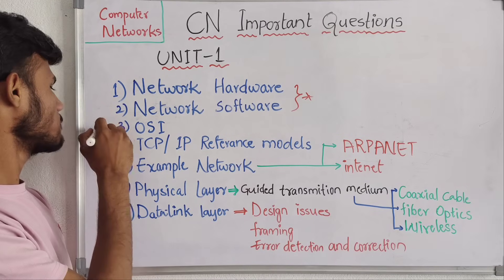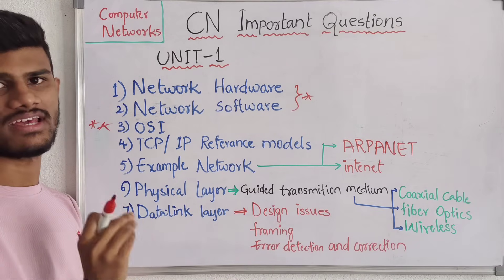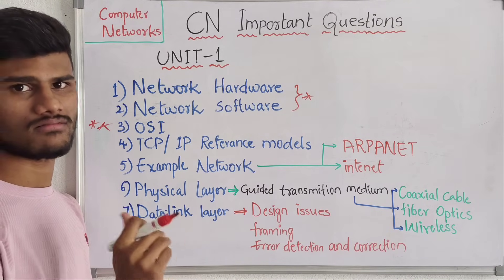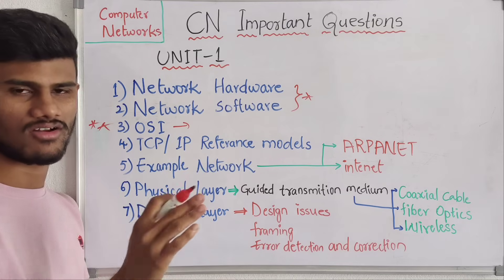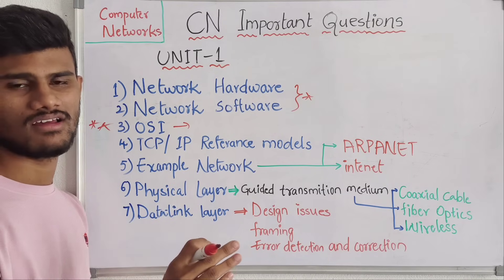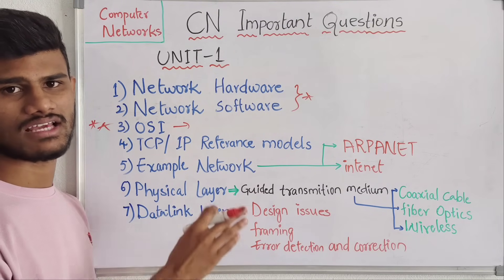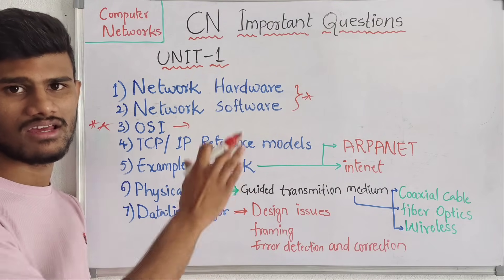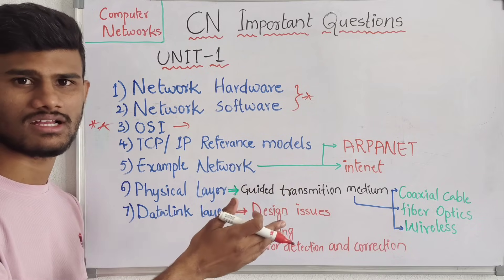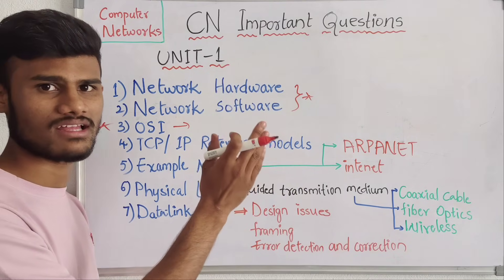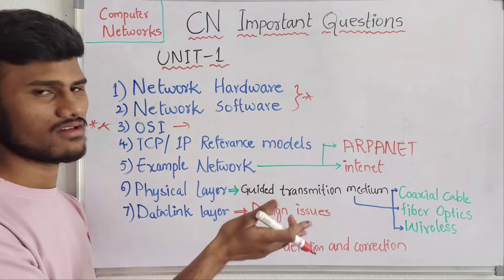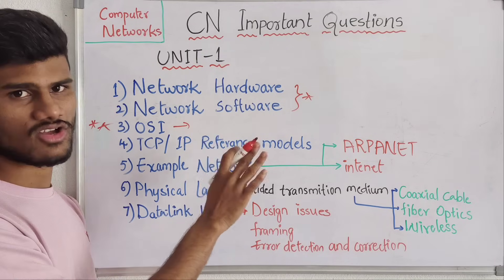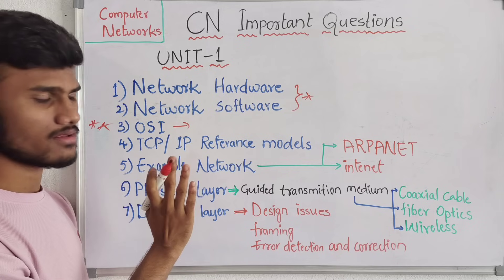Another important question is the OSI model. It is a method, and there are seven layers — seven computer network layers. You explain individually all the seven layers. This is all about the OSI model.